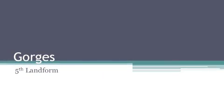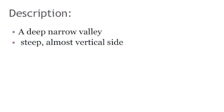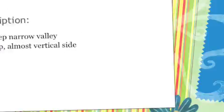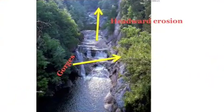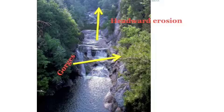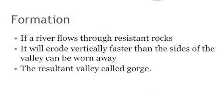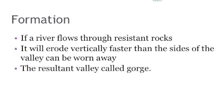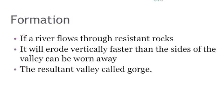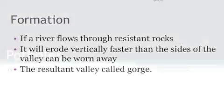Gorges — the fifth erosional landform. Description: a deep narrow valley with steep and almost vertical sides. Formation of gorges occurs if a river flows through resistant rocks. It will erode vertically faster than the sides of the valley can be worn away. The resultant valley formed is called a gorge.